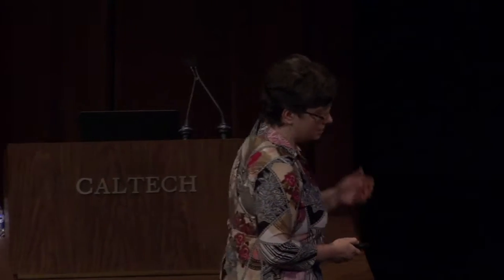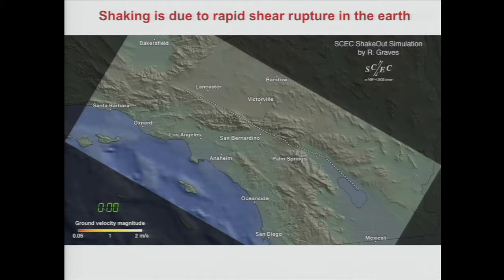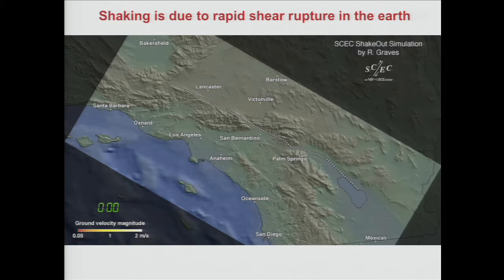Of course, our thinking evolved since then. We don't think that earthquakes are caused by catfish, at least not in Southern California. We think the shaking in earthquakes is due to rapid shear rupture in the earth. As plate motion occurs across a plate boundary, the two sides rapidly move past each other, generating waves.